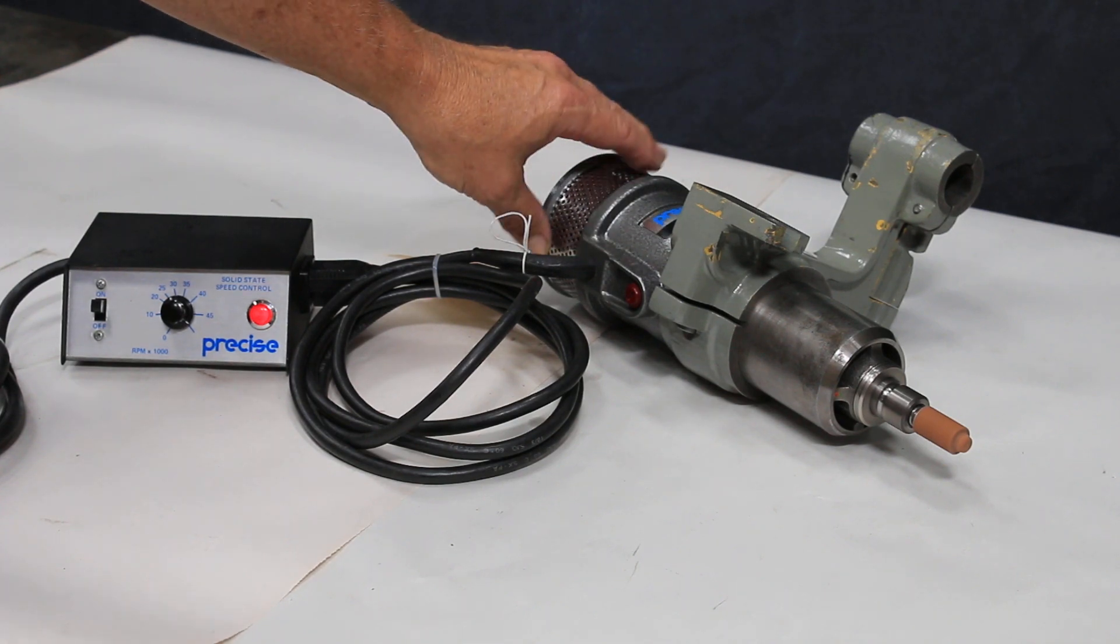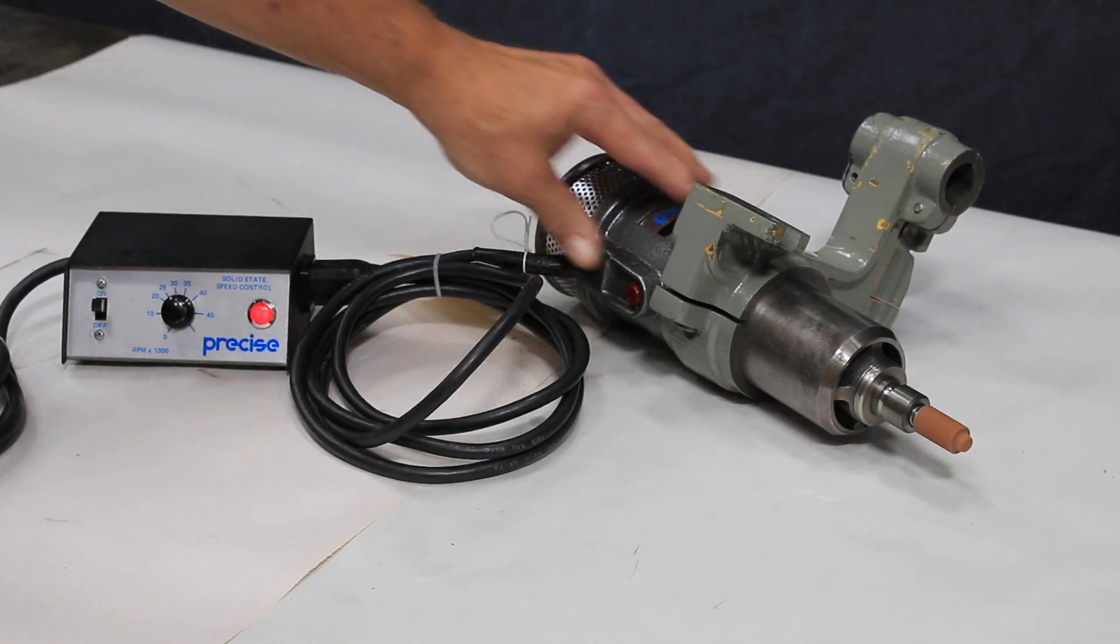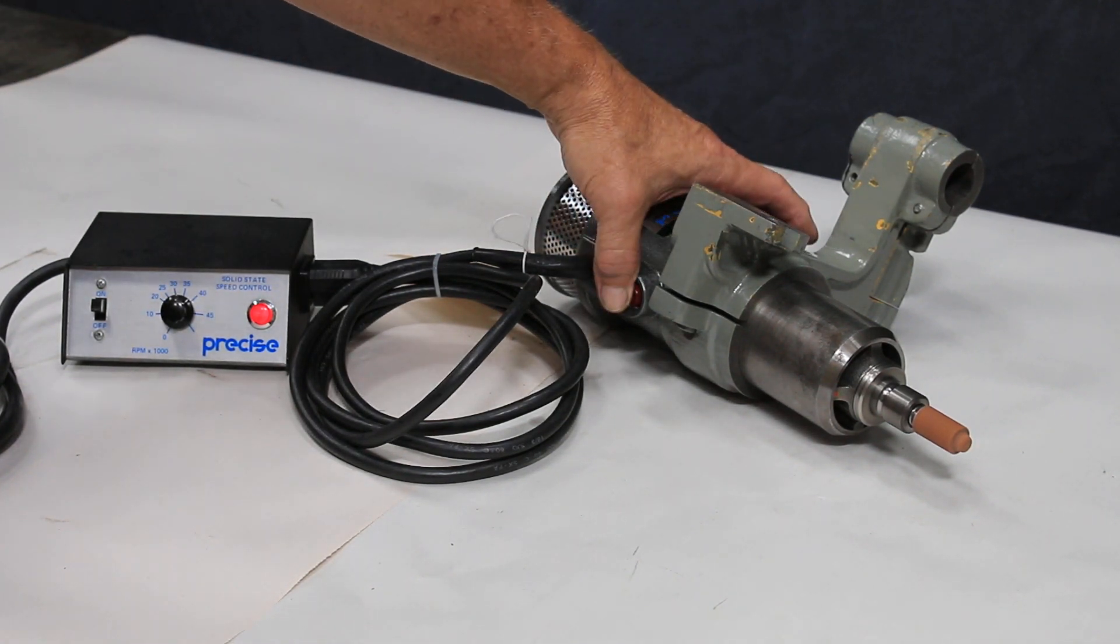It's got its own built-in air filter in the back here. The motor is actually contained in the back of the spindle. The brushes are here.